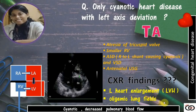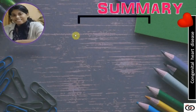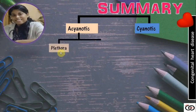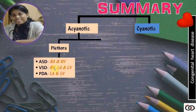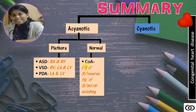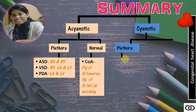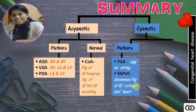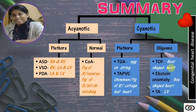Now summarizing what we discussed today: Acyanotic heart disease with plethora — ASD with right atrium and right ventricular enlargement; VSD with right ventricular, left atrium, and left ventricular enlargement; PDA with left atrium and left ventricular enlargement. Acyanotic with normal pulmonary blood flow — coarctation of aorta with figure-of-three, reverse figure-of-three, and inferior rib notching. Cyanotic with plethora — TGA with egg on string sign, and TAPVC with snowman or figure-of-eight or cottage loaf sign. Cyanotic with oligemic lung fields — TOF with boot-shaped heart, Ebstein anomaly with box-shaped heart, and tricuspid atresia with left heart enlargement.